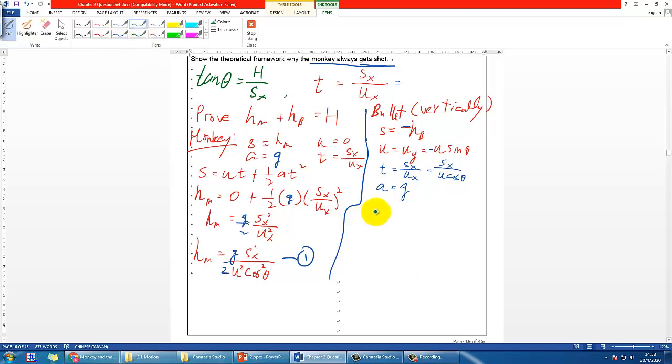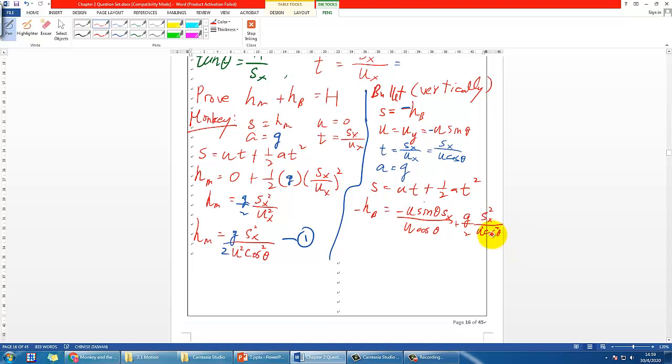So using the same way to do, then we can devise the equation using kinematics equation u*t plus half*a*t^2 and that will be negative h_b equals negative u*sin(theta) times t, that will be s_x over u*cos(theta), plus g/2 times t, so s_x over u*cos(theta) squared. So if you try to rearrange it then we could multiply the whole equation by negative one so that this become positive, positive, and this become negative, all right, to kind of make it a bit nicer. And I call this equation 2.